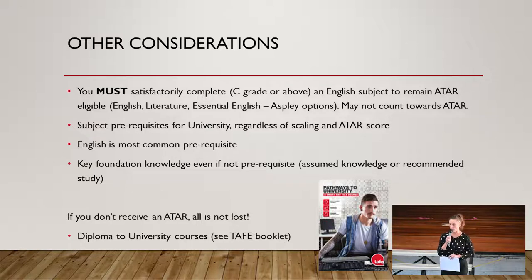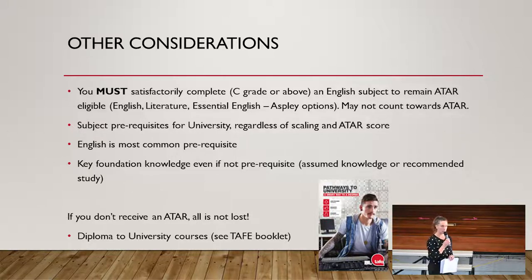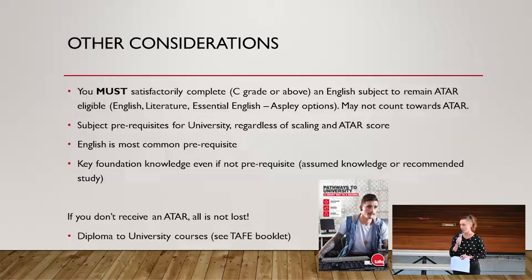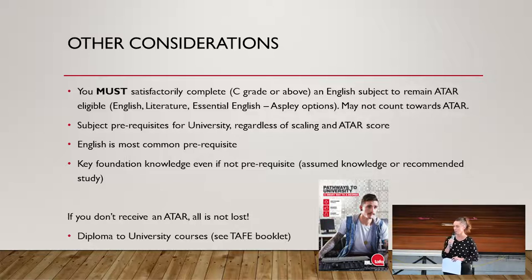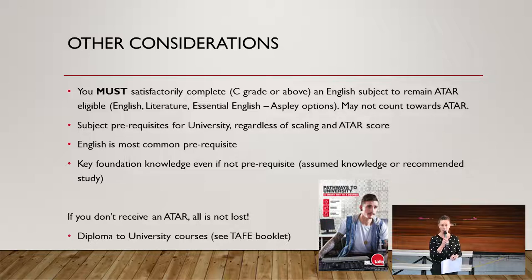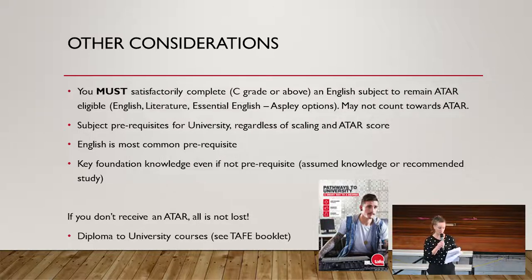If you do not get an ATAR, or do not get the ATAR score that you need, it does not mean that you cannot go to university in the future. There are lots of different pathways to get you to university and open up those doors. One key way is by doing a diploma at TAFE the year that you leave school, which can then springboard you into university the year after — sometimes with credit towards that university course and automatic entry. We will talk about that more in your set planning and as you move through Year 11 and 12.